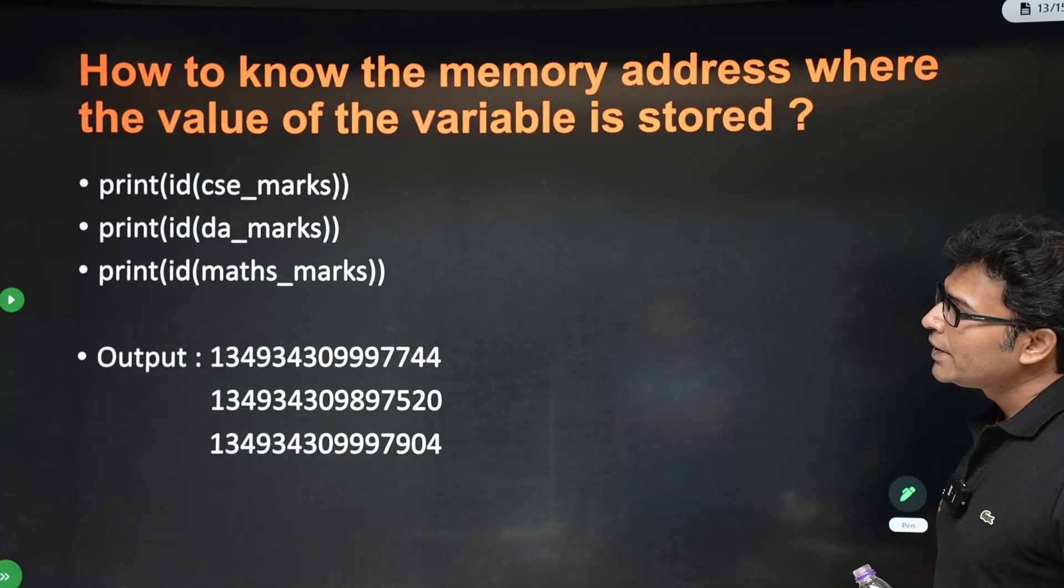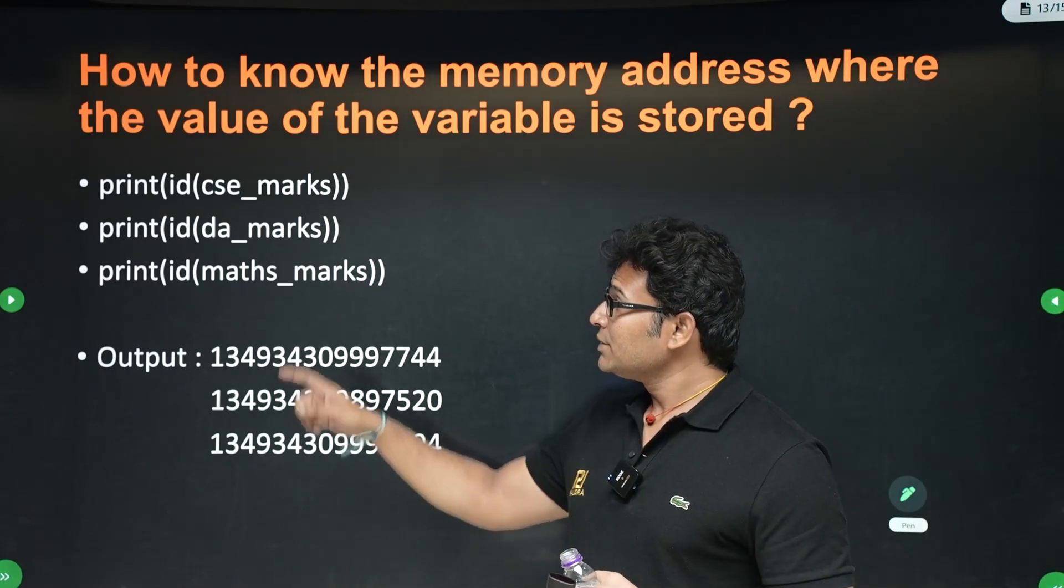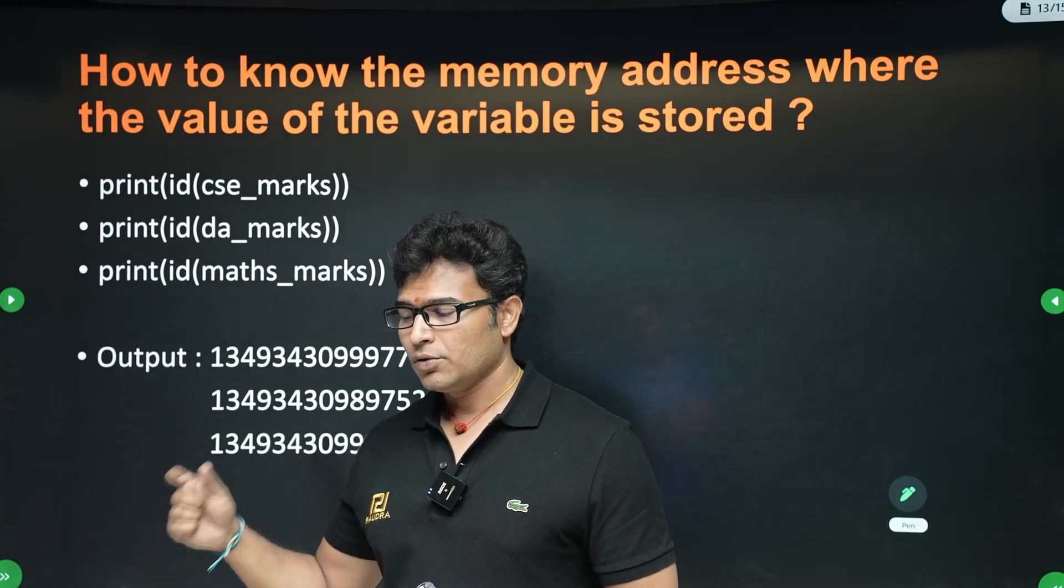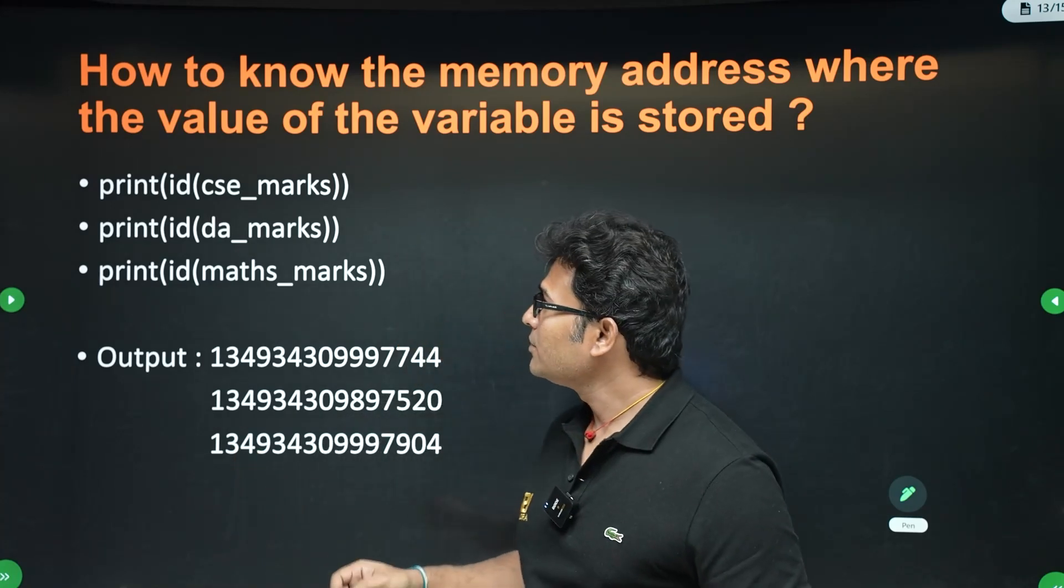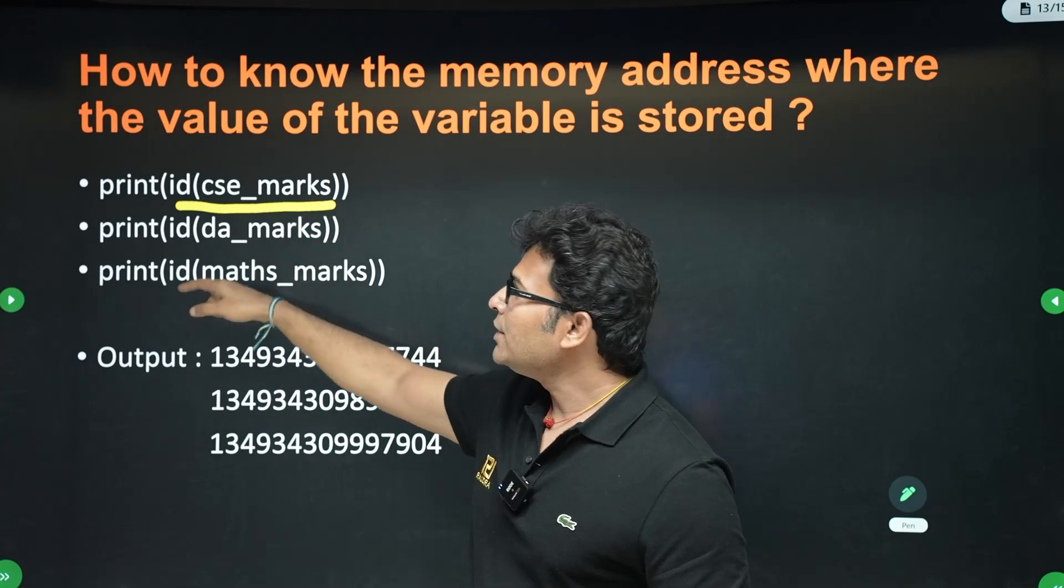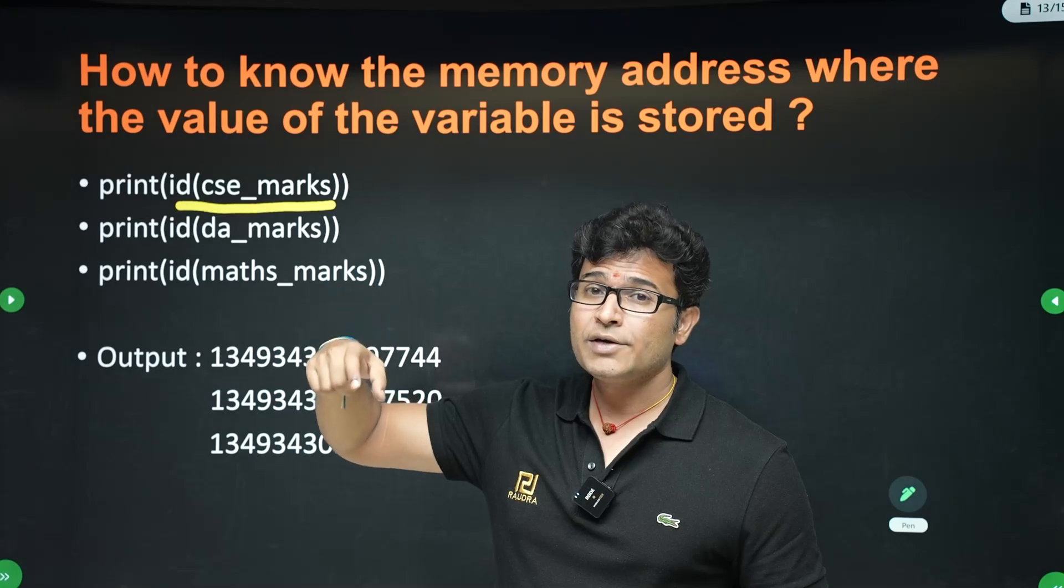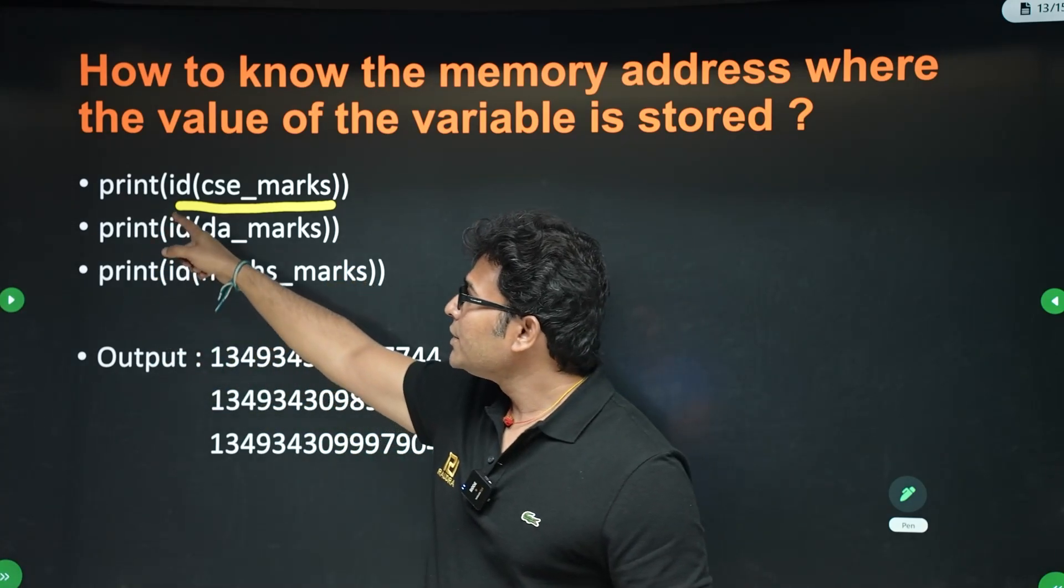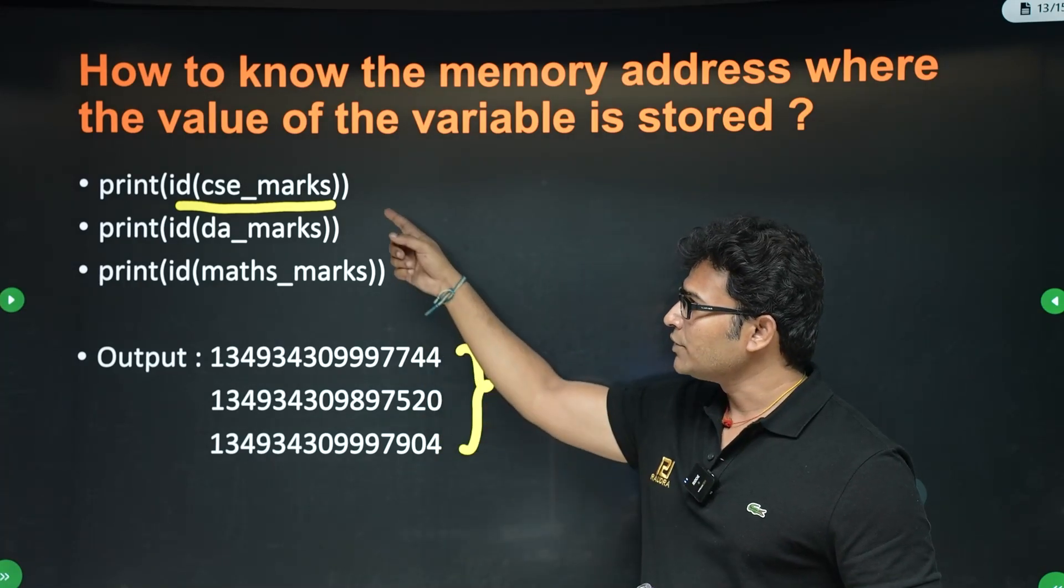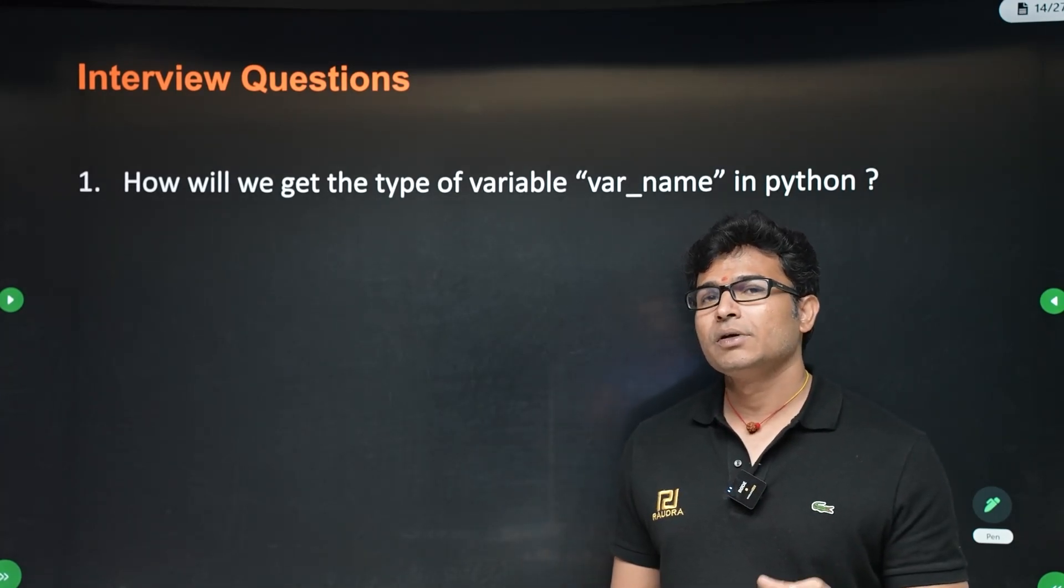Now, how do you get the memory location in which variable is present? It is not important that you know it, but this can be asked in the interview. So now that you have variables in the memory location, how do you get the memory location? That can be done using the ID function. If you write ID within brackets, the variable name, it will give you the memory location of that particular variable and you can print it using print. For example, I got these three. These are the memory locations of these three variables.